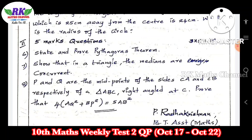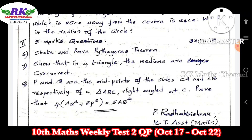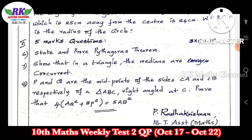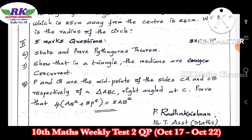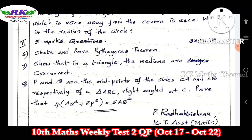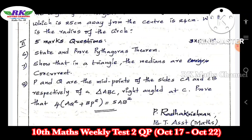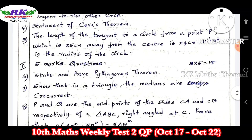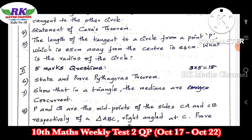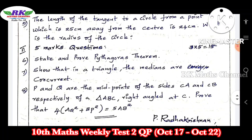Question number 7: show that in a triangle the medians are concurrent. Triangle medians are concurrent — more than two lines intersecting at one point means those lines are concurrent. The concept used in this statement is Ceva's theorem. That is important.